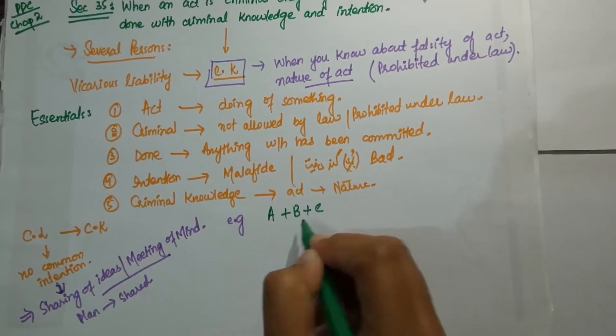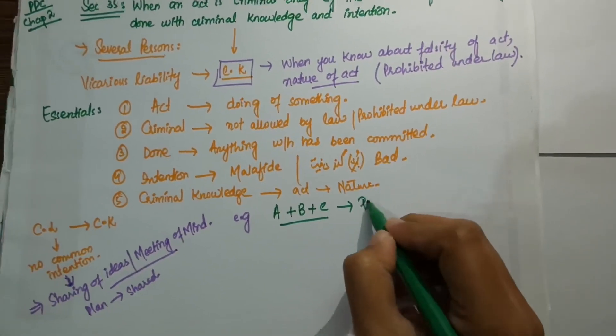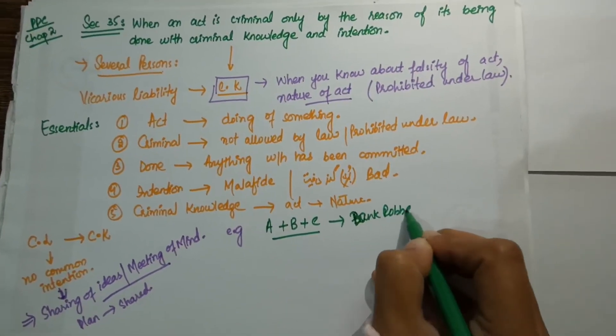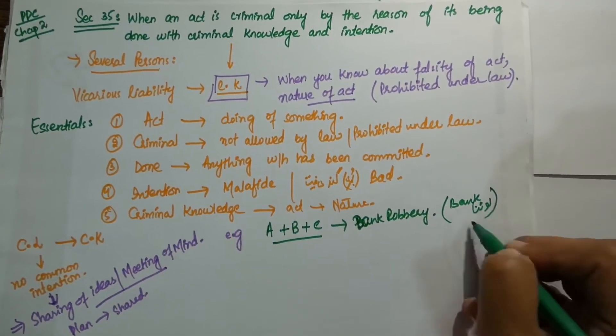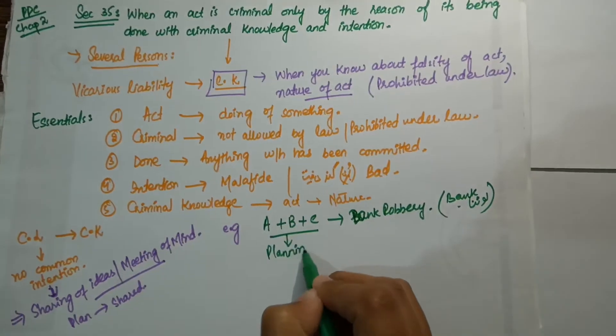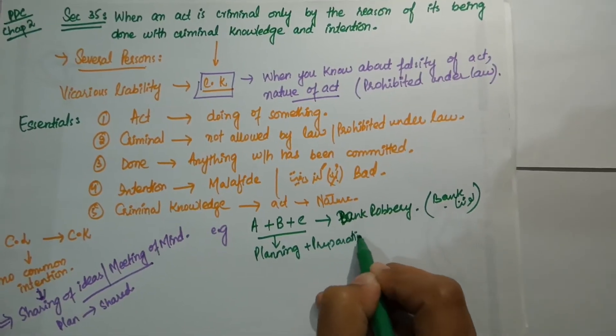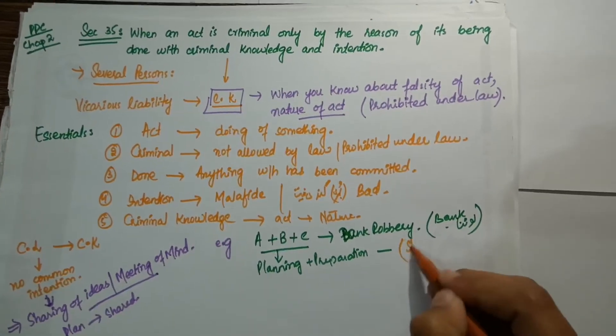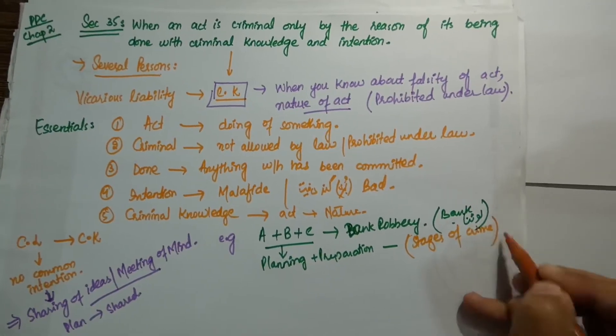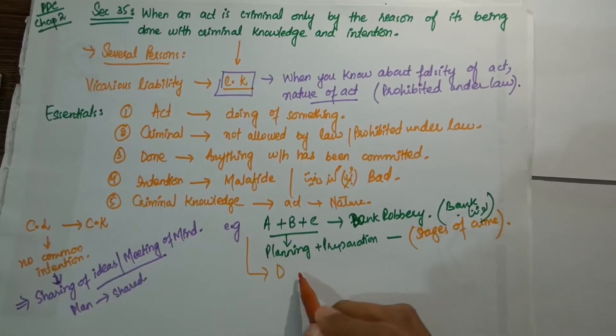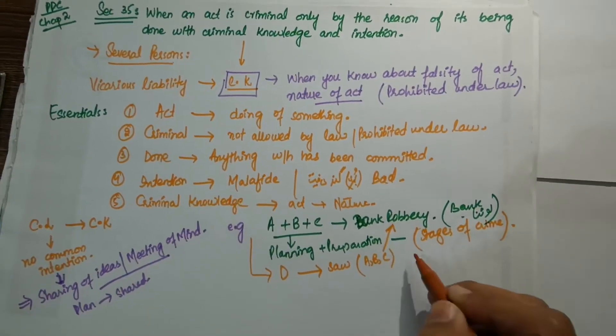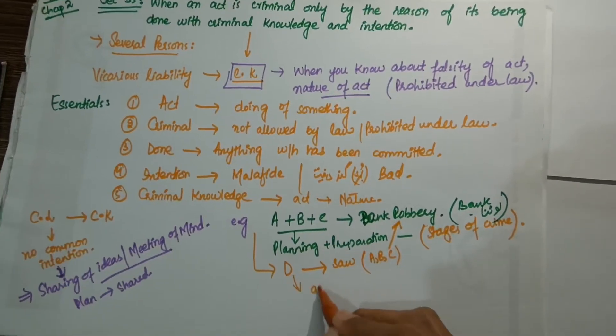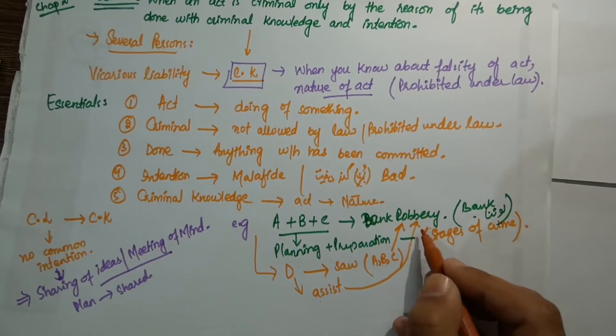Let's understand this with a simple example. A, B, and C are three men and they have planned bank robbery. A, B, and C have planning and preparation, means all the stages of crimes are included in it: number one planning, number two preparation.